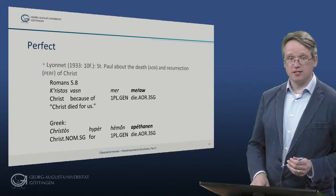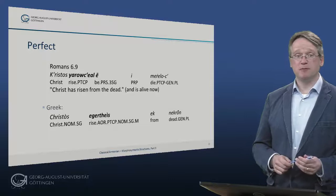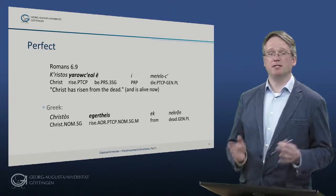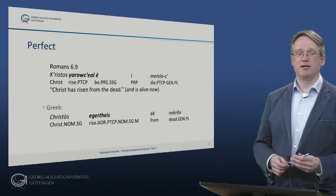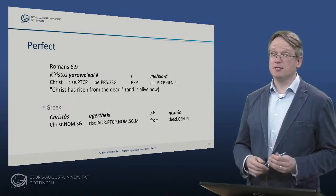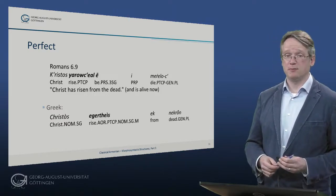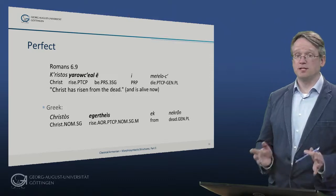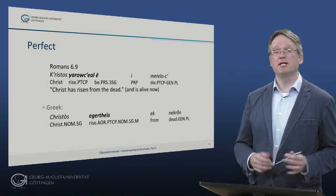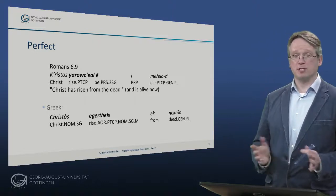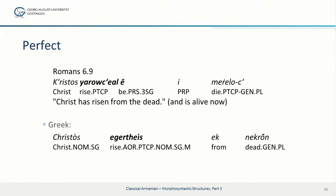In contrast, when talking about the resurrected Christ, the translator uses the perfect to indicate he is alive at the moment of speech: 'Christos haruzial e' — Christ has risen from the dead. Notably, the Greek version has an aorist here, just as in the preceding example. The Armenian use is thus independent of Greek — it does not simply copy the aspect choices found in the Greek text.